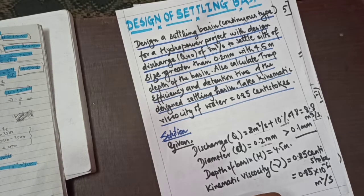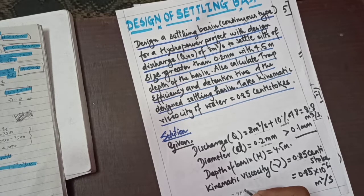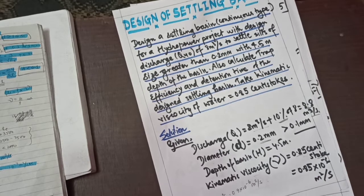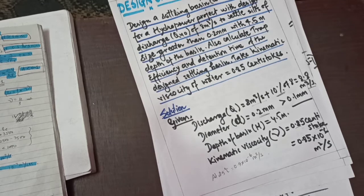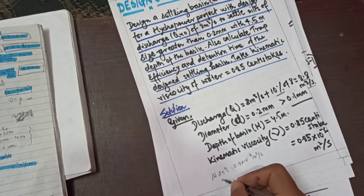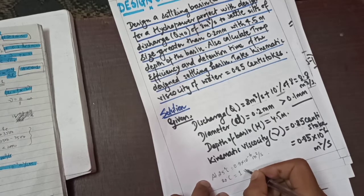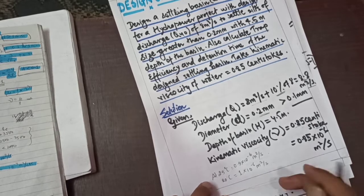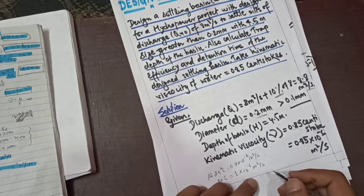At 25 degrees Celsius, kinematic viscosity is 0.9 × 10⁻⁶ meter square per second. At 20 degrees Celsius, it is 1 × 10⁻⁶ meter square per second. We use the kinematic viscosity value accordingly for our calculations.